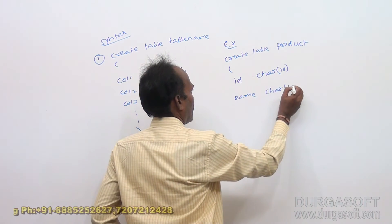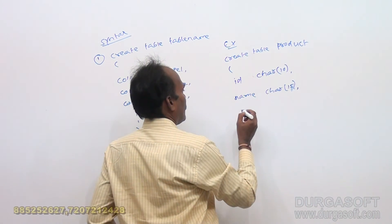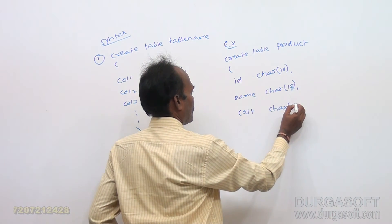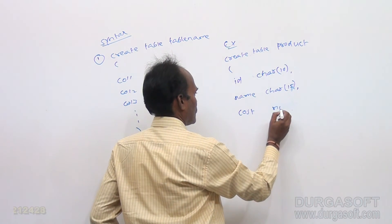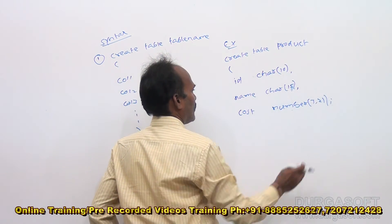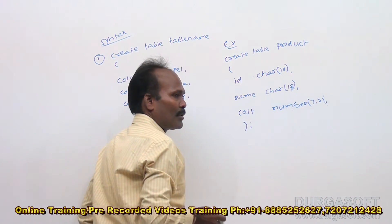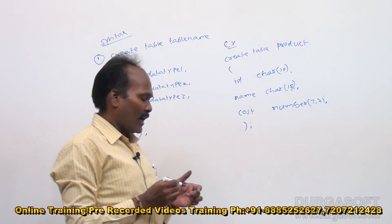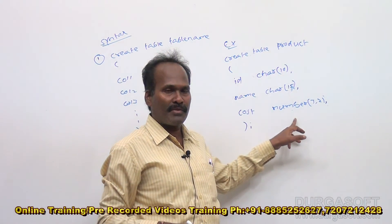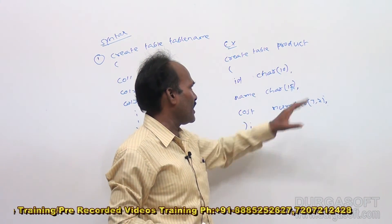Cost of the item. Cost character 15. Sorry, this is number, not cost. Number 7 comma 2. 7 comma 2. At the end put a bracket and close semicolon. What happens here? Create table product. Id means id indicates product id, name product name, cost. Cost includes what? Cost number 7 comma 2. 2 means, 7 becomes precision, 2 becomes scale. Like this you can create a new table.